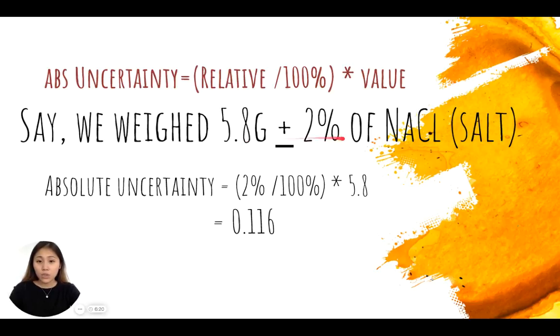Knowing these two specifics, we know that our absolute uncertainty needs to be one significant figure and one decimal point. So this means that we need to round our 0.116 to 0.1.